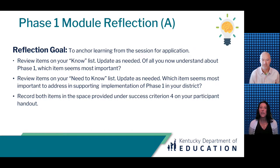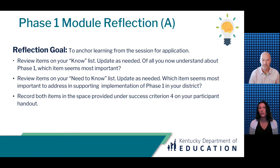Go back to the know/need-to-know table on page 1 of your participant handout. First, review the items on your know list and update as needed, then determine which item seems most important for you to remember. Then review the items on your need-to-know list, update as needed, and determine which item seems most important to address in supporting implementation of Phase 1 in your district. Record both of those items in the space provided under success criterion 4 on your participant handout. Pause the video and restart after completing this portion of the final reflection.